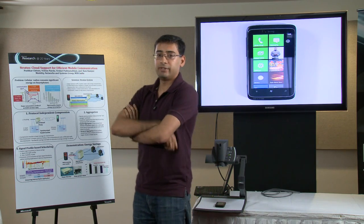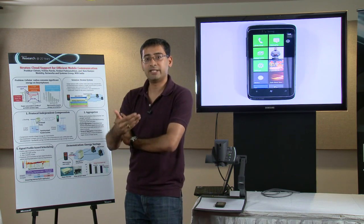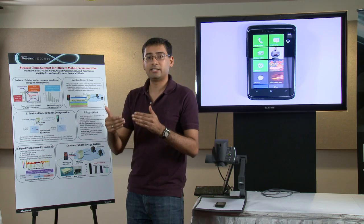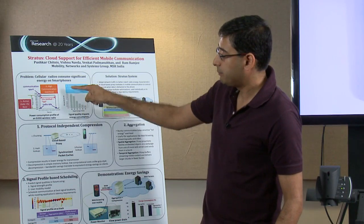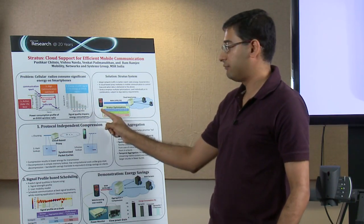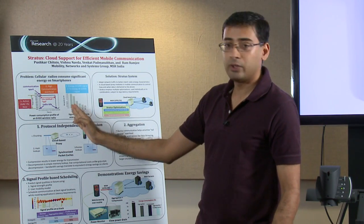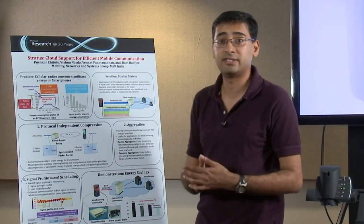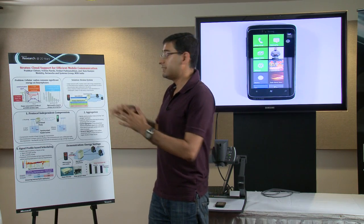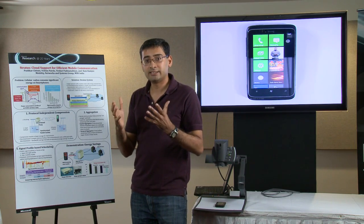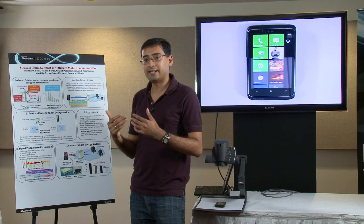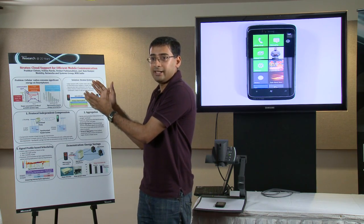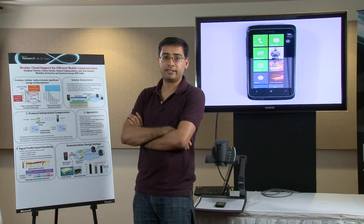The third problem is the impact of signal strength. If you are operating in poor signal conditions, the energy consumption is much higher. I have a plot of energy per bit for various signal strength values — the leftmost bar corresponds to poor signal conditions and the rightmost to good signal conditions. The energy difference is as high as 7x. Given these insights about energy consumption of a cellular interface, we went on to design Stratus.